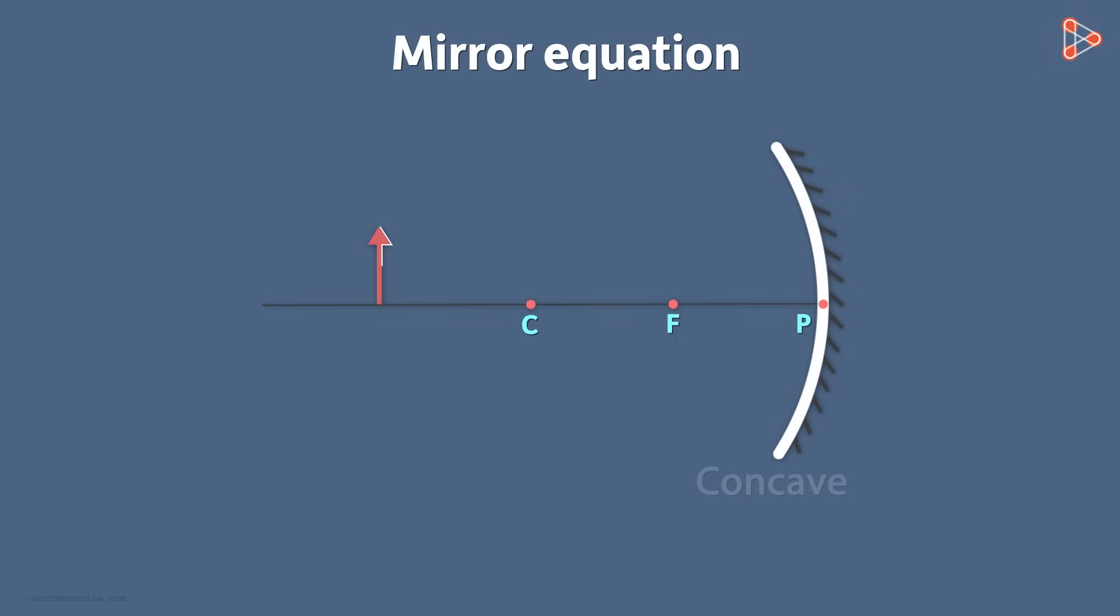Suppose that our object is kept behind C at a finite distance away from the mirror. We draw our usual diagram to get the image which is of course a real image.